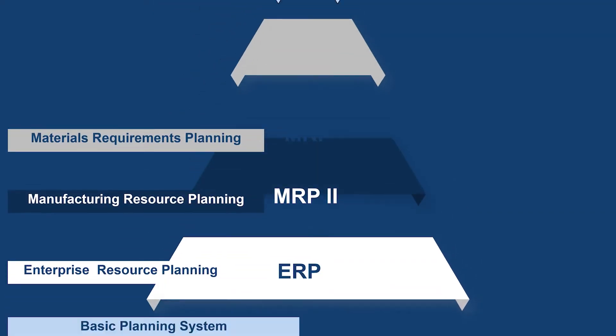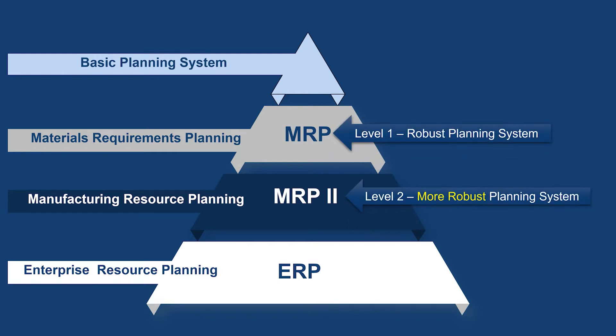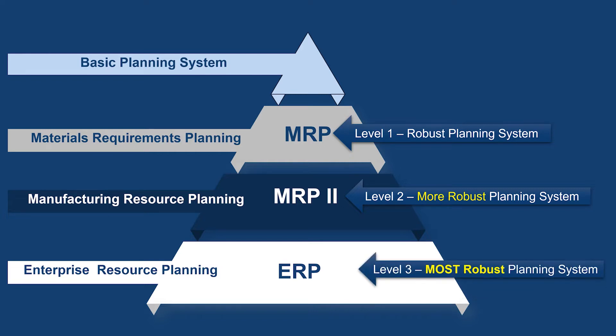MRP is about everything that goes into those finished goods products. You plan for the raw material, then you produce that product once you receive all your raw material. One key difference between MRP, MRP2, and ERP is the level of bandwidth these programs can handle — they are software systems that manage data. Think of MRP as level 1, MRP2 as level 2, and ERP as level 3.